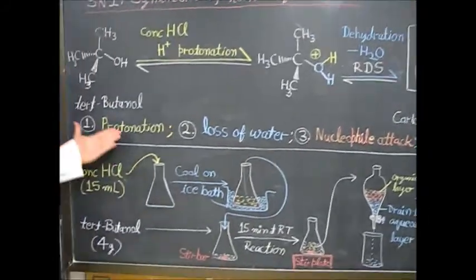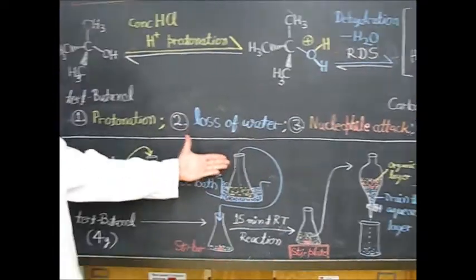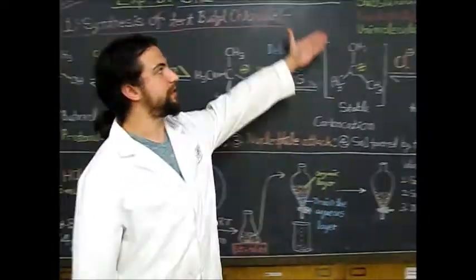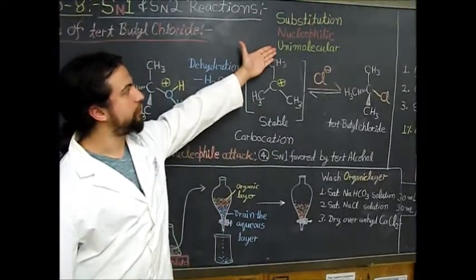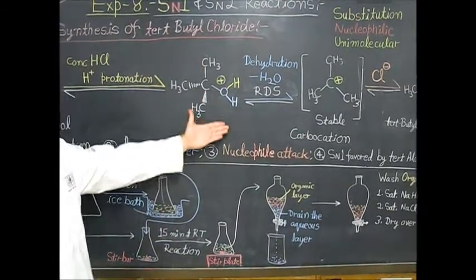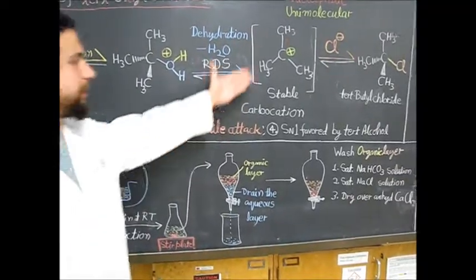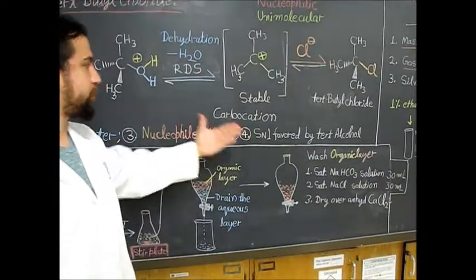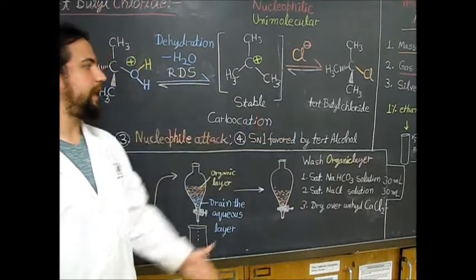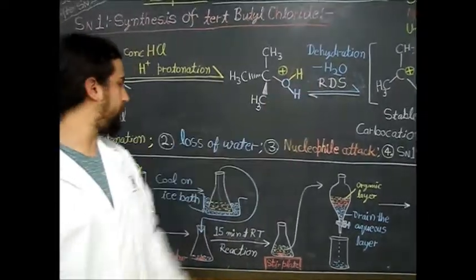It starts with protonation followed by the loss of water, which is the rate-determining step in the substitution reaction. It should be known that this is a substitution nucleophilic unimolecular (SN1) reaction because the rate-determining step is the dehydration step. Then the nucleophilic attack occurs by the chloride ion. SN1 is favored by tertiary alcohols, which is why we are doing this alongside the SN2 reaction.